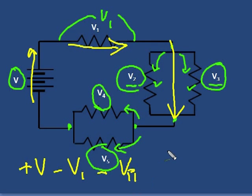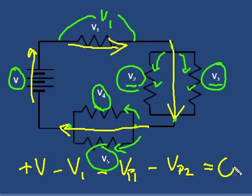And I'm just going to call it V parallel 1, through the parallel. Now, we have a drop through either V4 or V5, both the same. I'm just going to call it V parallel 2. And this equals zero.